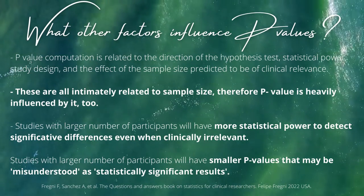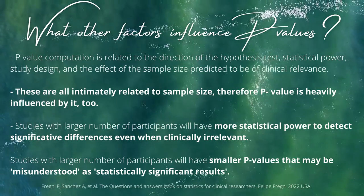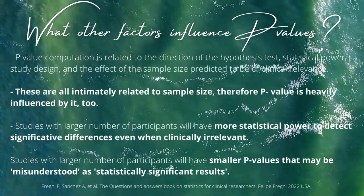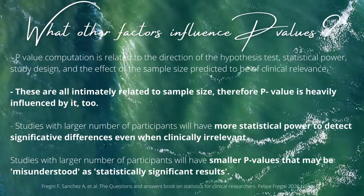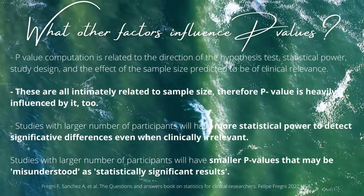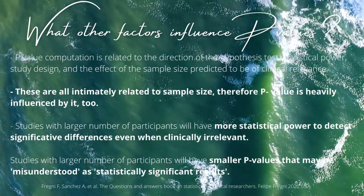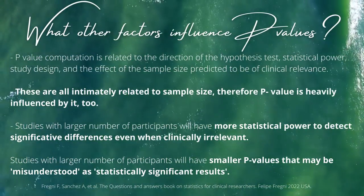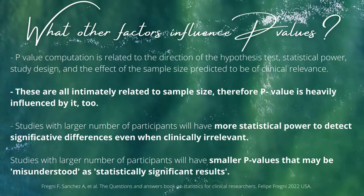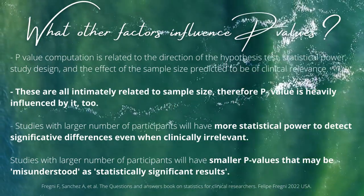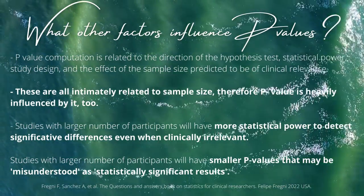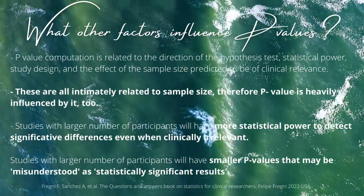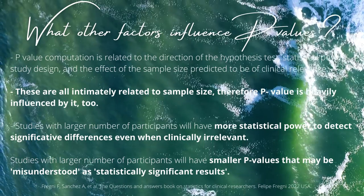So what other factors influence p-values? The p-value, when computed, is related to the direction of the hypothesis test, the statistical power, the study design, and the effect of sample size, which are predicted to be of clinical relevance according to the study design. These are all intimately related to sample size. Therefore, p-value will be heavily influenced by sample size as well. Studies with a larger number of participants will definitely have more statistical power to detect significant differences, even when those differences are clinically irrelevant, and will yield smaller p-values that may lead to misunderstanding of a statistically significant result.